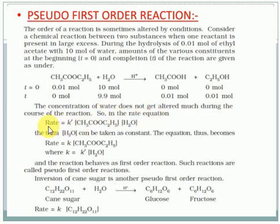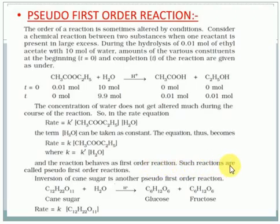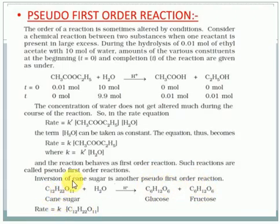The rate equation is rate = k × [ester] × [water]. But since the concentration of water does not get altered much during the course of the chemical reaction, water concentration can be taken as a constant. The equation becomes rate = k' × [ester], where k' is a new constant. The rate of reaction is not dependent upon the water molecule, and the reaction behaves as a first-order reaction. Such reactions are called pseudo first-order reactions. Another example is the inversion of cane sugar: sugar undergoes hydrolysis in an acidic medium, forming glucose and fructose. The rate equation depends only on the concentration of cane sugar, not on water.